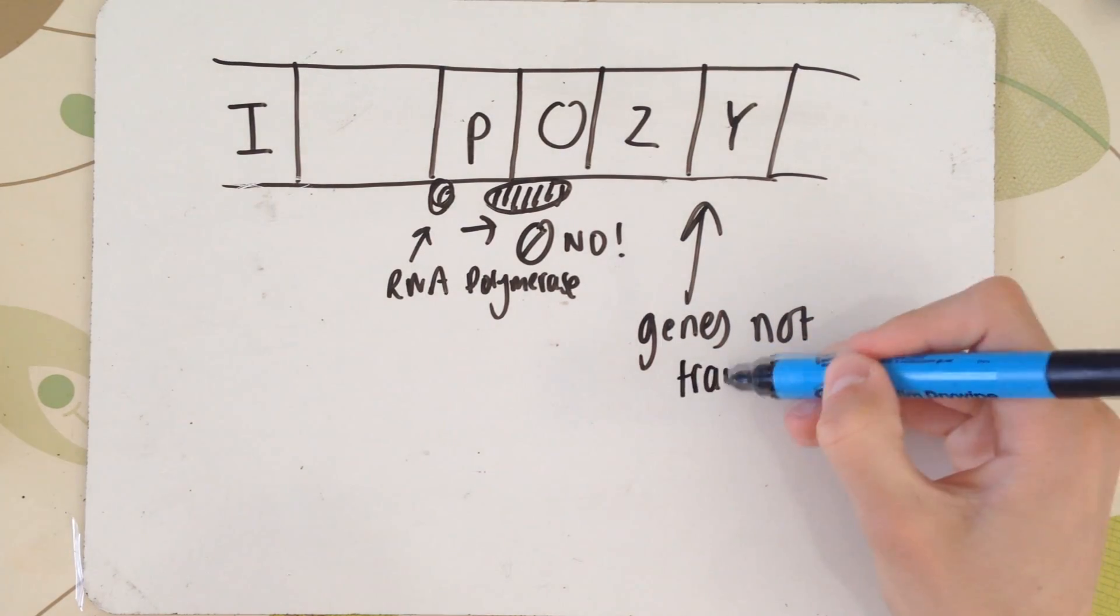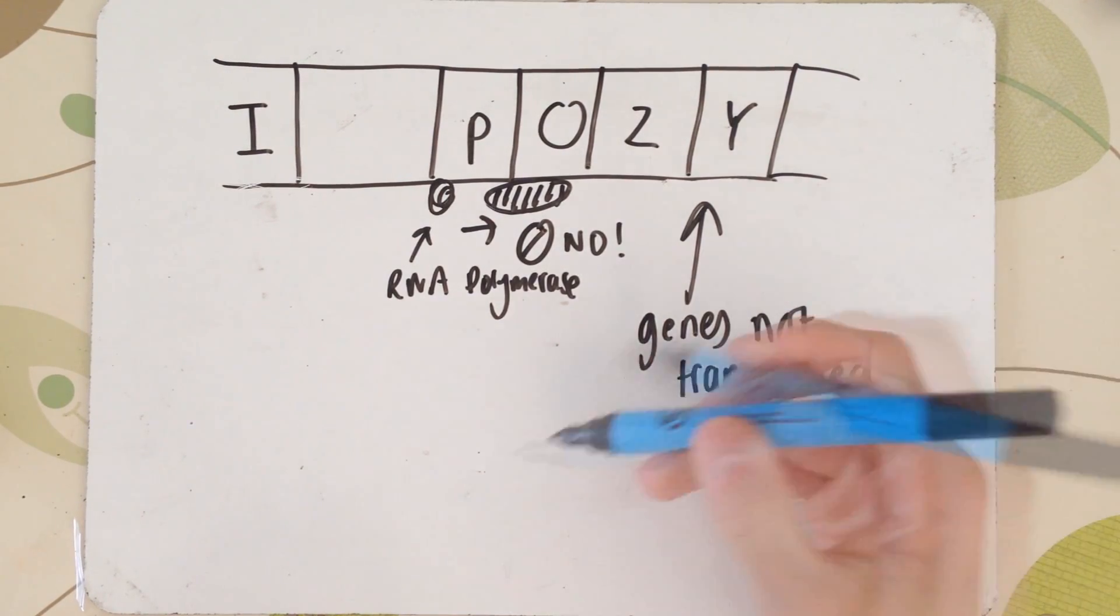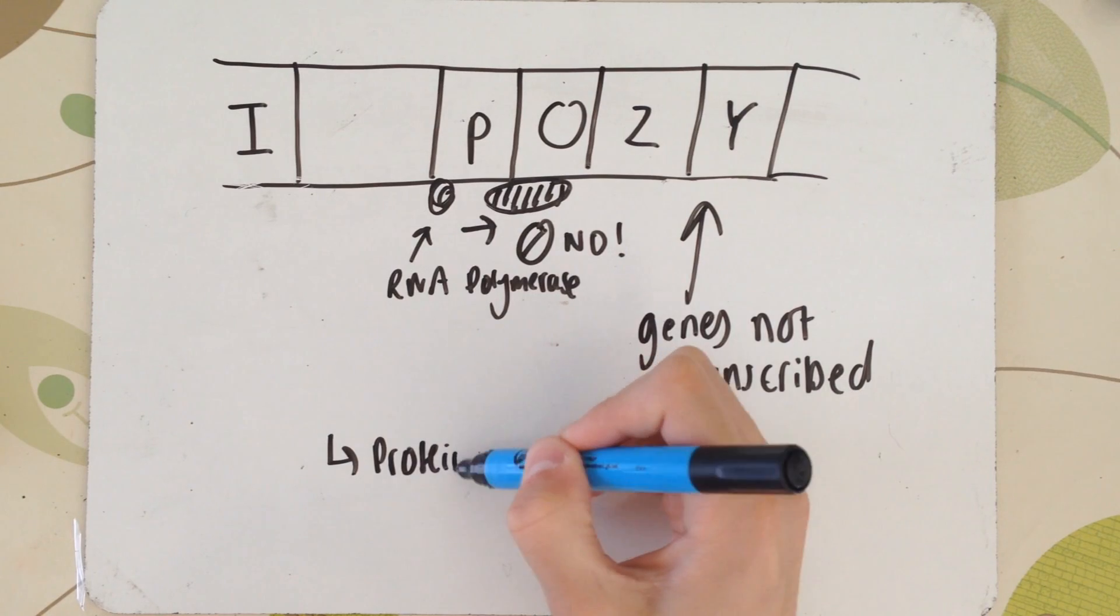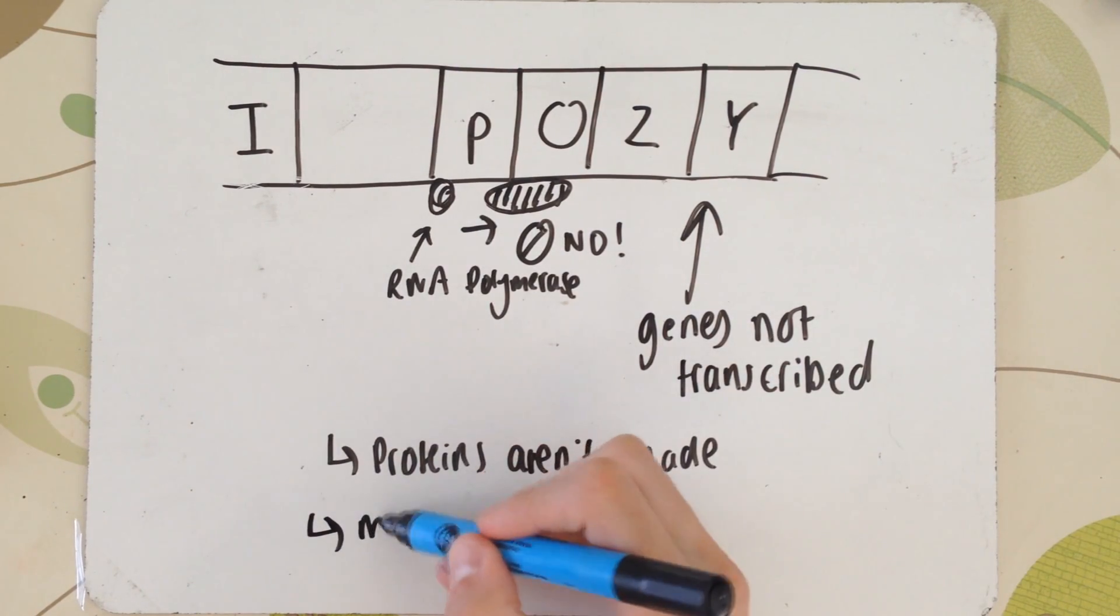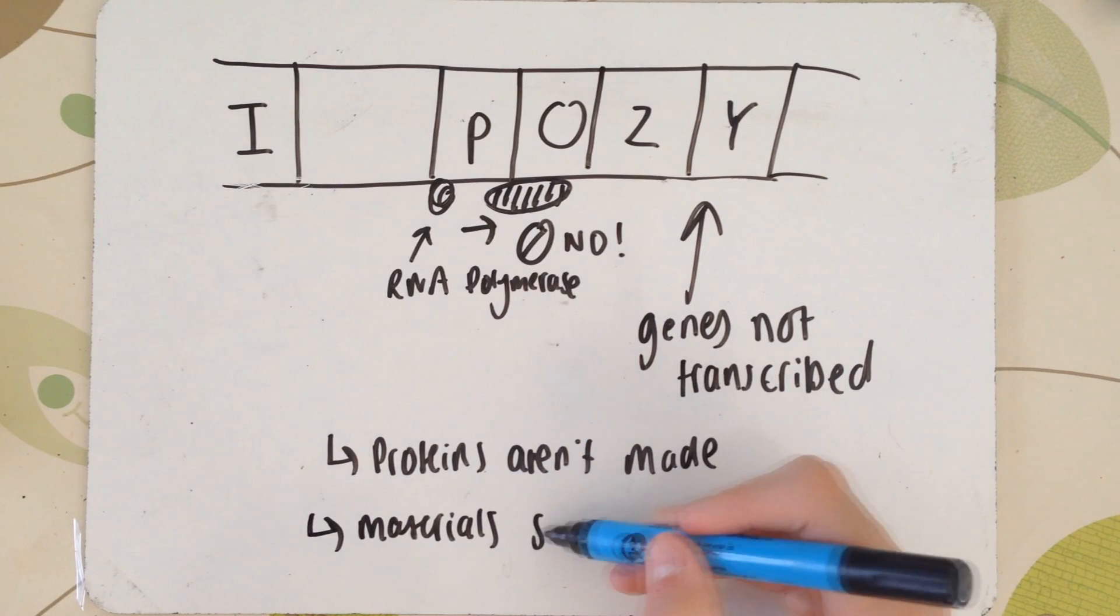And technically, this is therefore beneficial. If these genes aren't transcribed, the proteins aren't made, which means the materials are saved. I mean, there's no point creating genes for lactose if there's no lactose present.